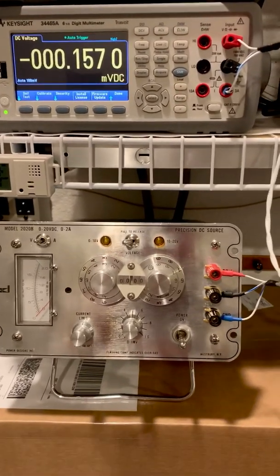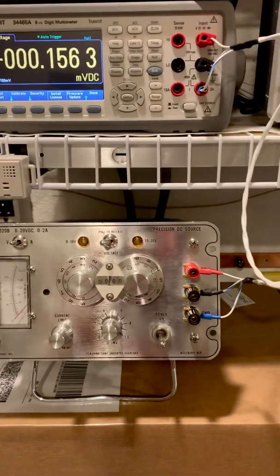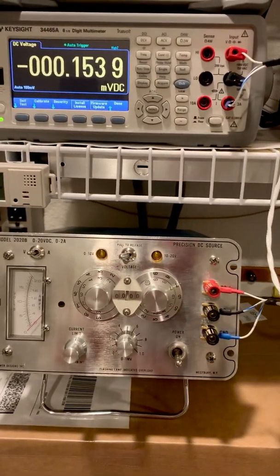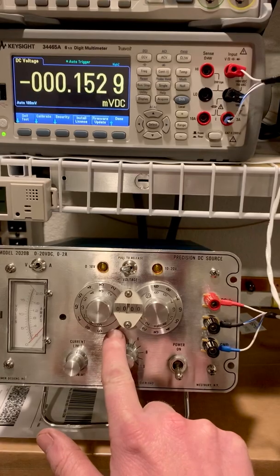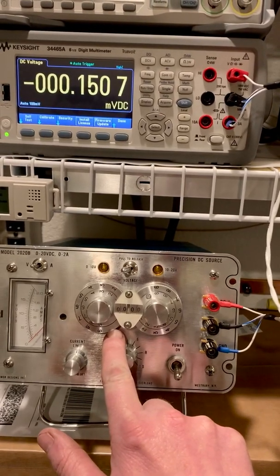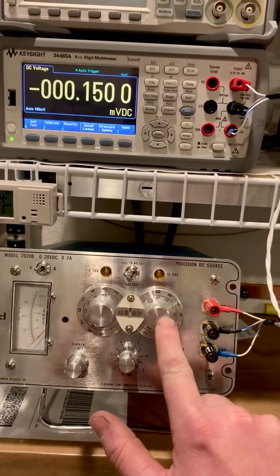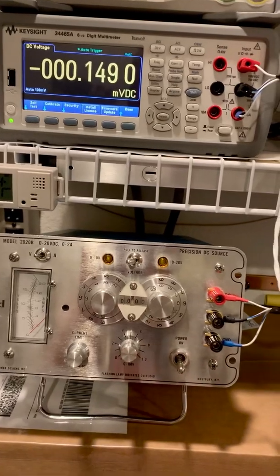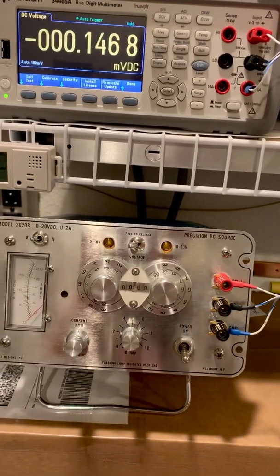The voltage is set by these decade dials: volts, 100 millivolts, 10 millivolts, 1 millivolt, and then a little vernier down here for 0 to 1 millivolt.